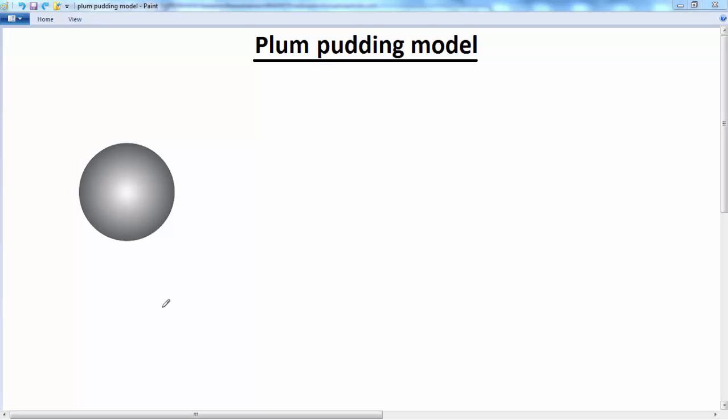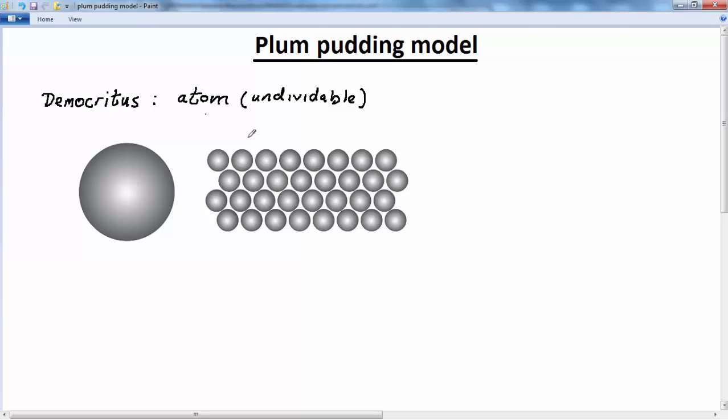Before that, we're going to say that the idea of the atom has been around since the times of the Greeks. It was Democritus who first proposed the idea that all the matter or substances around us was made of indivisible particles called atoms. So Democritus first proposed the idea of the atom, and the atom comes from a Greek word which means undividable. According to Democritus, everything around us was made up of these undividable particles, whether they be solids, liquids, or gases.